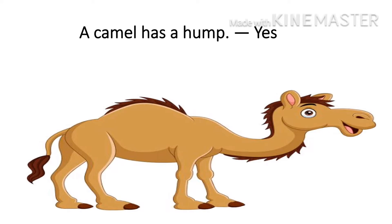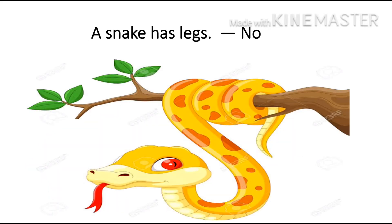Now look at this picture. A camel has a hump. Can you see the back of the camel? Of course it has a hump. So we will write Y-E-S, Yes. A snake has legs. A snake doesn't have legs. So we will write N-O, No.